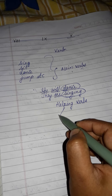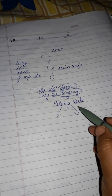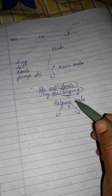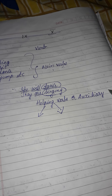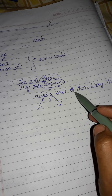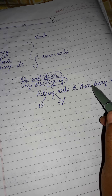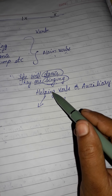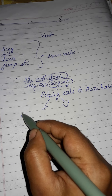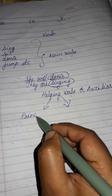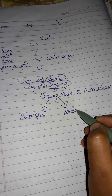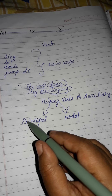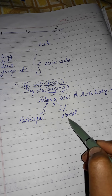Helping verbs are of two types. The other name for helping verbs is auxiliary verbs — we can call them auxiliary verbs. The two types are: principal helping verbs, or modal helping verbs. Otherwise, we can say principal auxiliaries or modal auxiliaries.